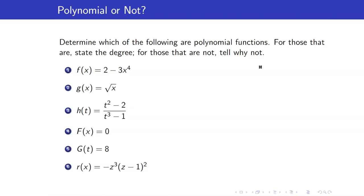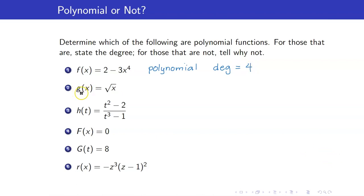Let us determine which of the following are polynomial functions, and for those that are, let us state the degree; for those that are not, tell why not. Number one: f of x equals 2 minus 3 times x to the 4. This is a polynomial with degree equal to 4. Number two is not a polynomial, because it has a square root. The square root of x is the same as x to the 1/2, so the exponent of x is a fraction, not a non-negative integer.